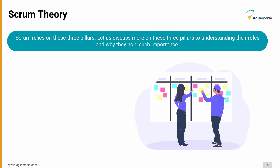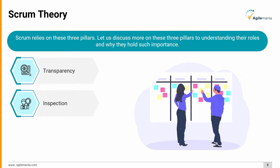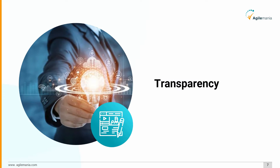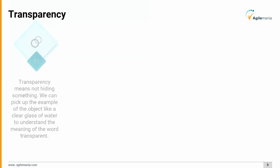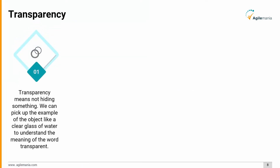The three pillars are transparency, inspection, and adaptability. We will discuss each pillar in detail for a clear understanding. First, transparency: transparency means not hiding something. We can use the example of a clear glass of water to understand the meaning of the word transparent.